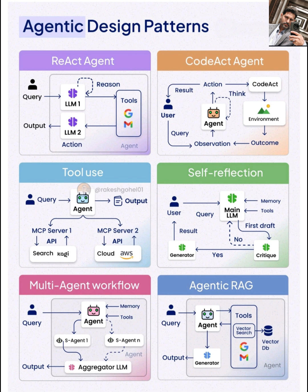Moving on to tool use. This pattern is pretty straightforward — it highlights how agents can leverage external tools to extend their capabilities. When faced with a query, the agent decides which tool is most appropriate to use, like a search engine, a database, or a cloud service like AWS, and then uses it to gather information or perform an action. The output from the tool is then used to generate the final response. This allows agents to access and process information far beyond their internal knowledge.